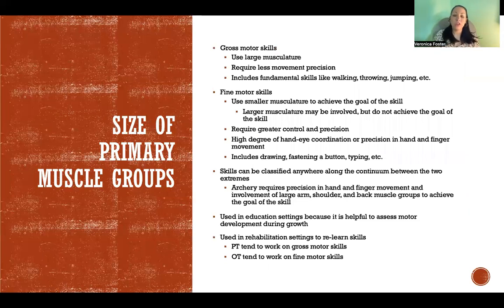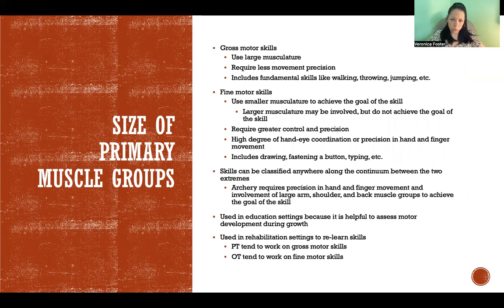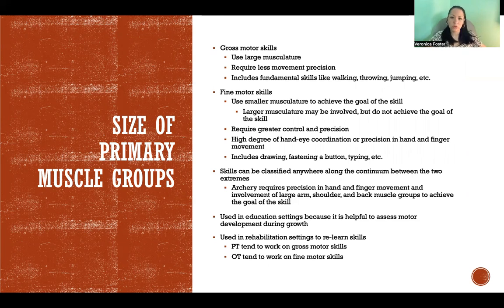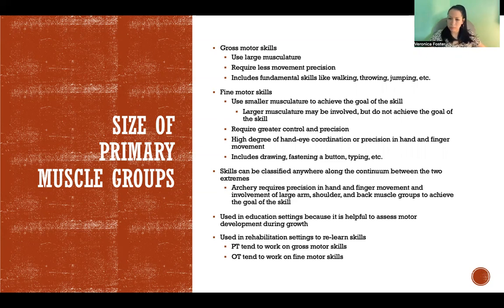On the continuum where gross motor skills and fine motor skills are the two extremes: gross motor skills use large musculature and require less precision. Most of our fundamental movement patterns like walking, throwing, and jumping are classified as gross motor skills. Fine motor skills use small musculature and require a great deal of control and precision — a lot of hand-eye coordination and precise hand and finger movement. Examples include drawing, fastening buttons, typing, and playing musical instruments.